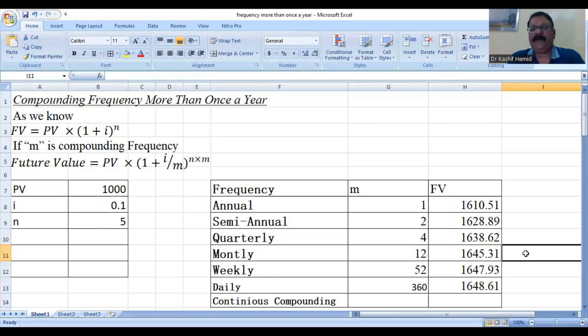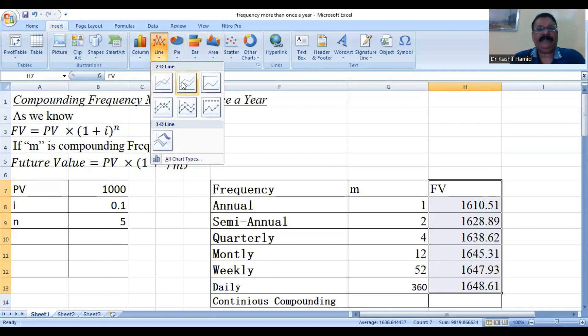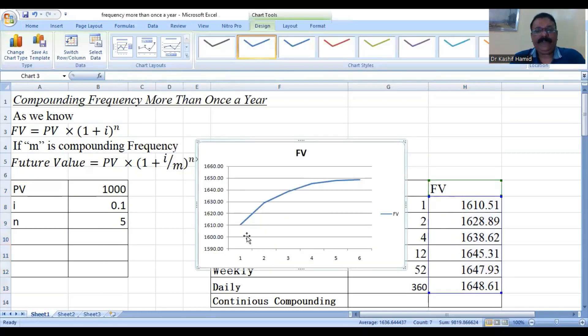It means that if we have the principal amount in the compounding process, we have the principal amount of the future value. The graph of the future value, if we look at the graph, the future value is increasing. The increasing trend of the future values.